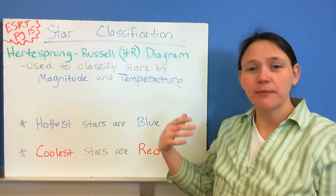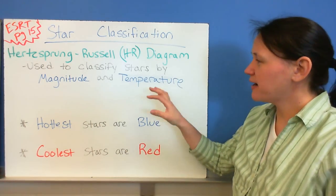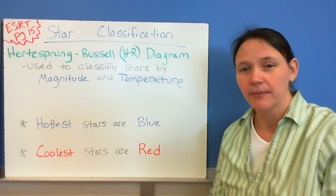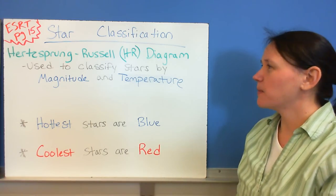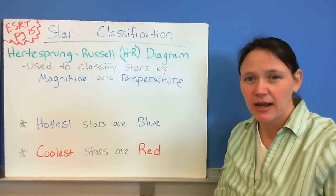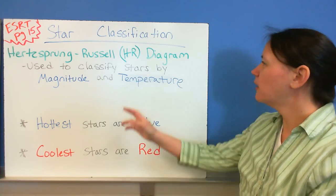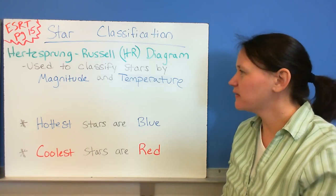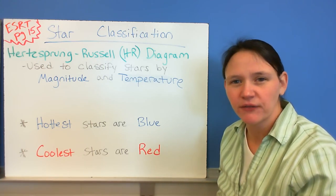Now we talked about the different stages there, but we can actually take the stars that we see in the sky, and we can classify them and group them. And this was done by a couple of astronomers, Hertzsprung and Russell. They developed the Hertzsprung-Russell diagram, or we'll probably just call it the HR diagram in class. And this is on page 15 in your reference table.